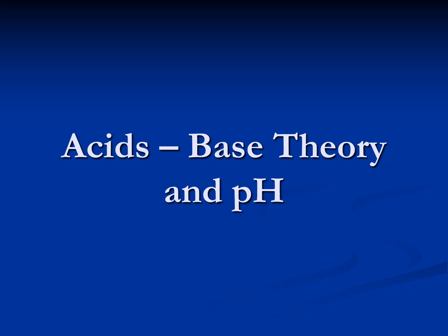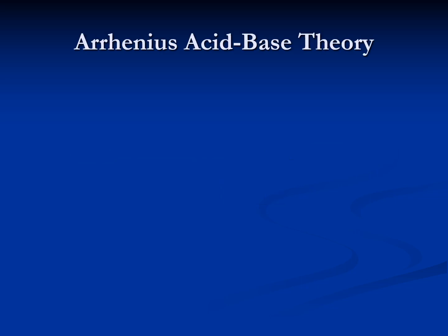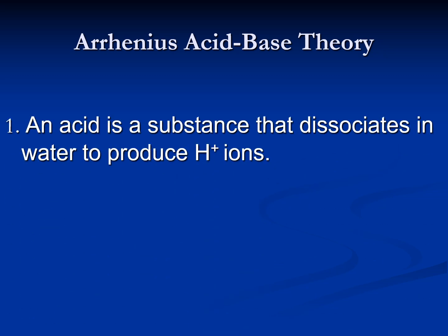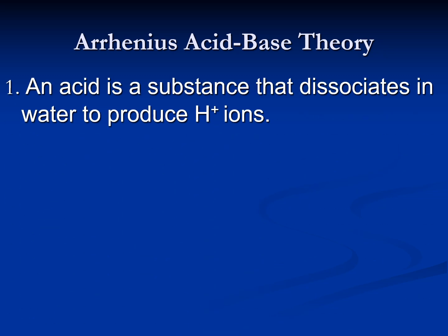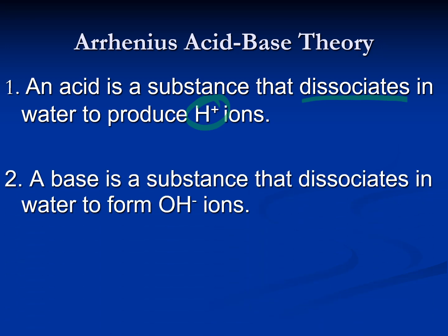Acid-base theory and pH. Arrhenius' acid-base theory essentially says that an acid is something that when you put it in water, it's going to dissociate — dissolve and break apart — and when it does that, it's going to produce hydrogen ions, which are coming from the actual acid itself. A base, Arrhenius said, is the same idea: you have a substance and when you put it in water it's going to release hydroxide ions. So acids release hydrogen ions and bases release hydroxide ions.